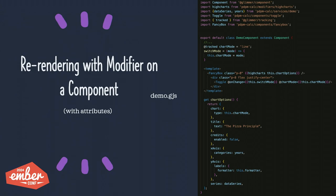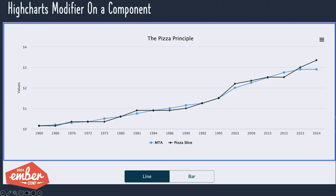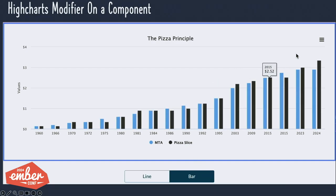Another cool thing about Ember modifier is that we can invoke it on a component, as long as that component takes attributes. Here's an example of that, with a toggle piece to better exemplify re-rendering the graph. Here's our component called FancyBox — an arbitrary component that adds a border and takes attributes, which is where the modifier gets passed in. The invocation is simple, just the same way as with a div element. This allows us to re-render the graph, going between a line and a bar chart. And you'll notice this hamburger menu — this is actually a module from HiCharts that allows us to export data into a PDF or get the CSV accompanying the graph.